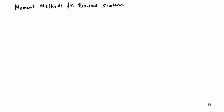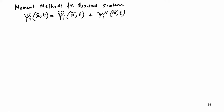For moment methods, what we can do is decompose the reactive scalar variable into the Favre-averaged variable and the fluctuation term. This is the Favre version and this is the fluctuation term. If we average the previous equation and introduce these Favre variables, we get the following.